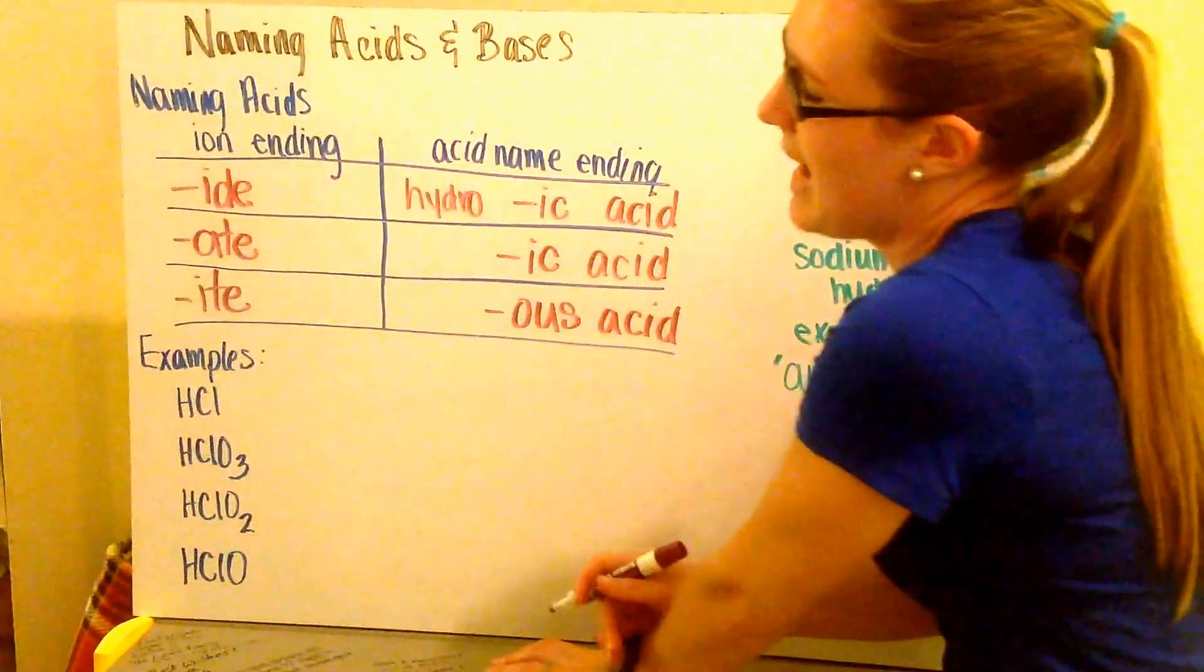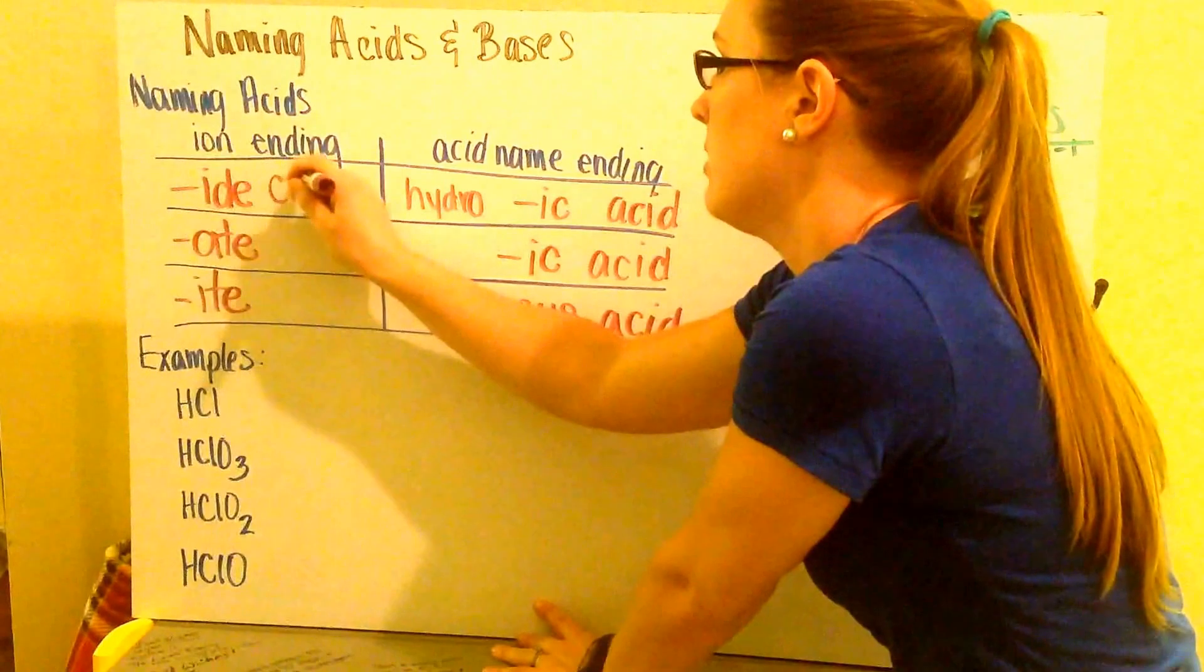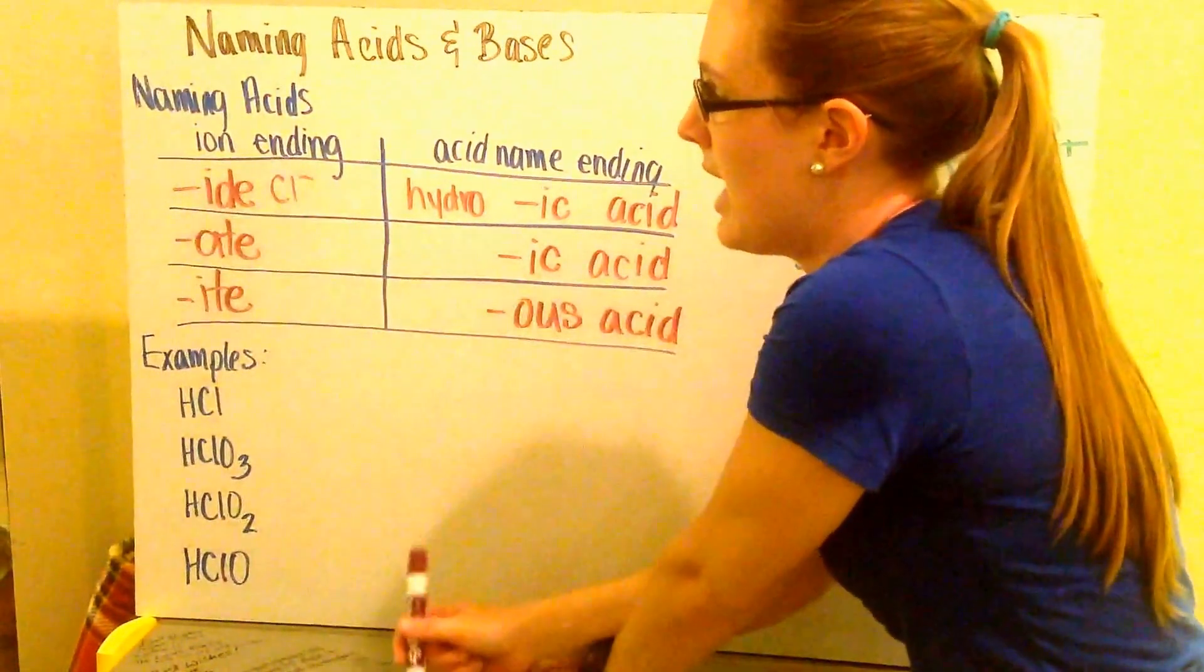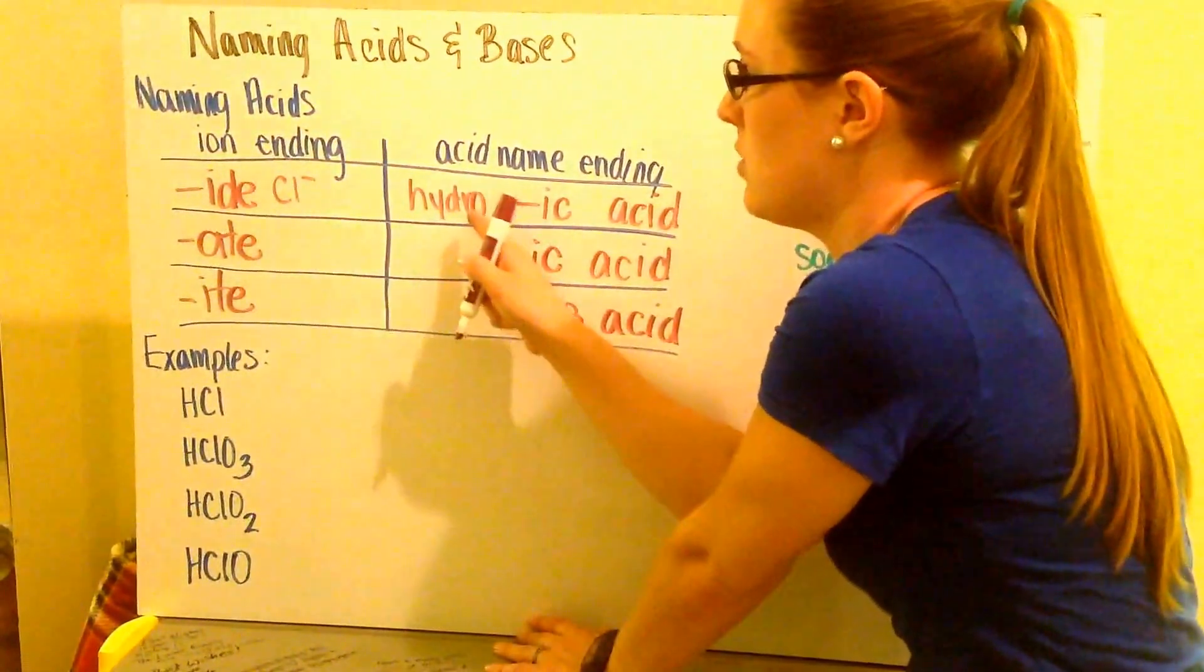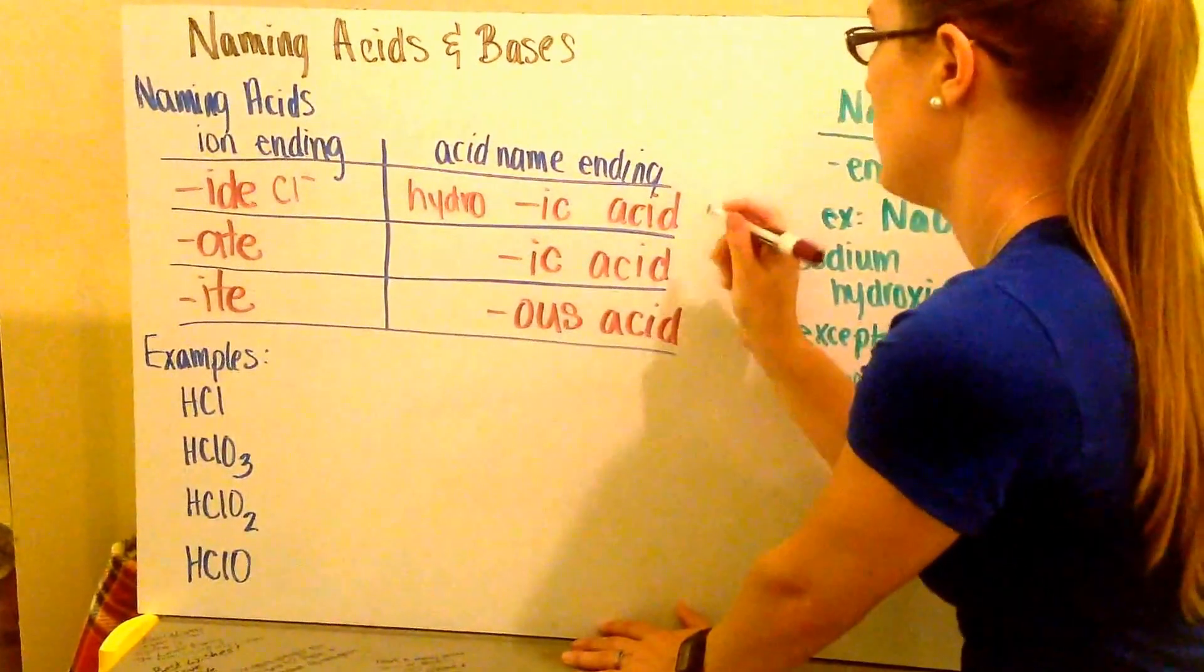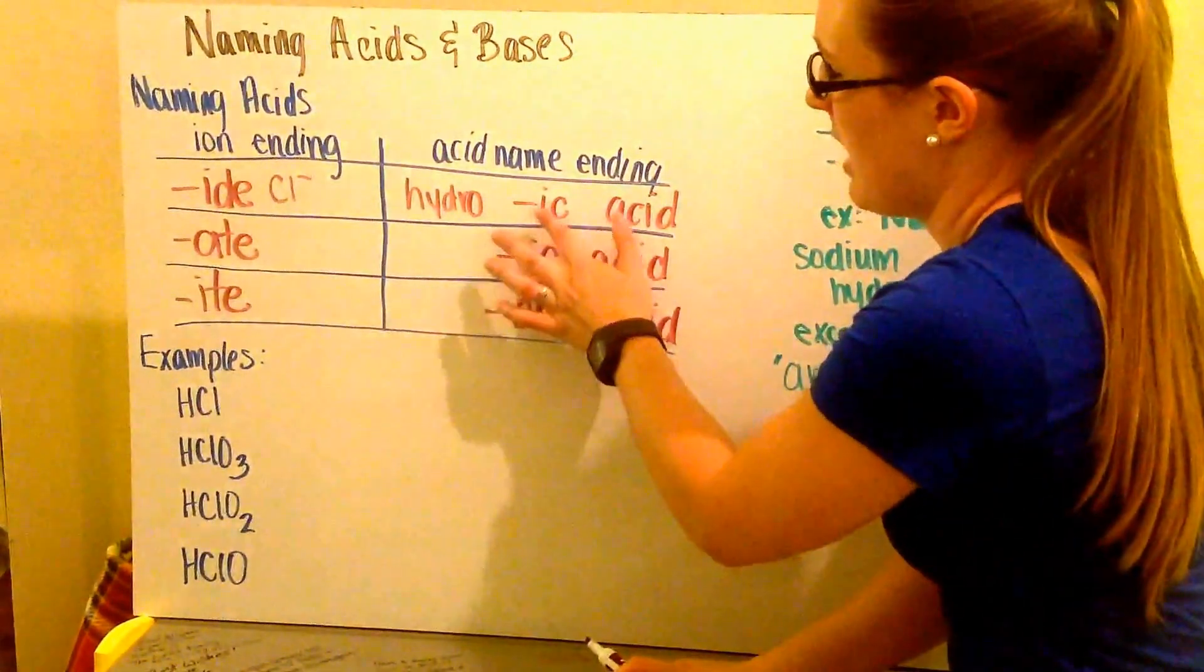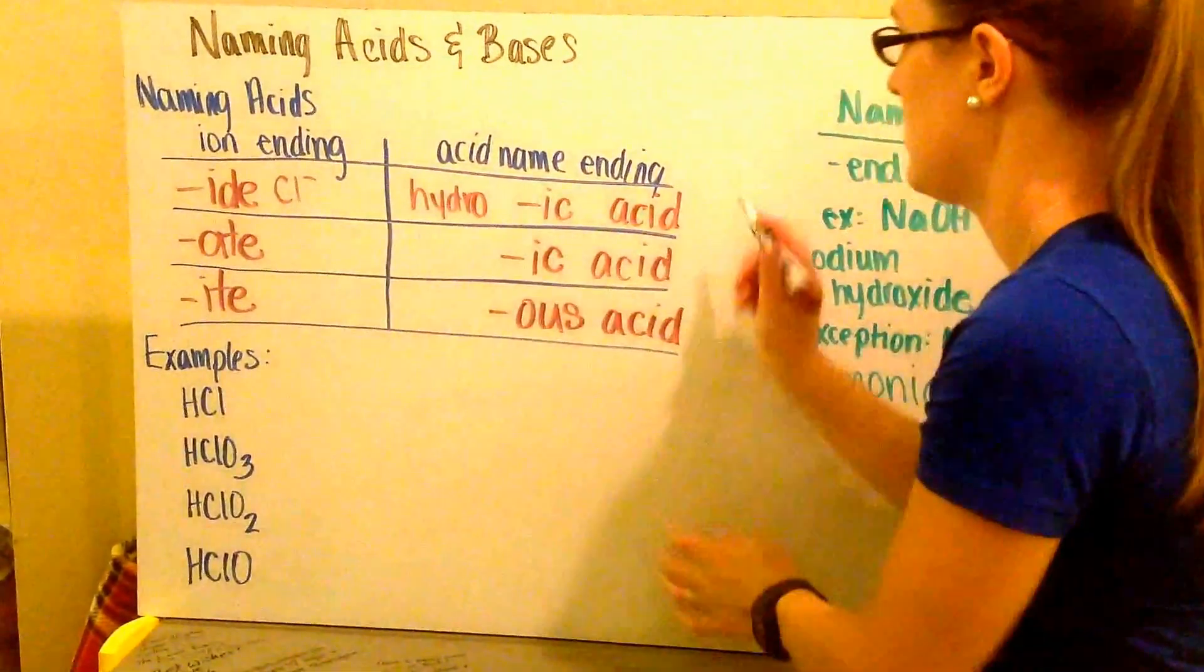So an example of an ion that ends in IDE would be chloride. So that's Cl minus. Your chloride ion is going to turn into hydrochloric acid. So you'd write that as hydrochloric with an IC ending, which is HCl.